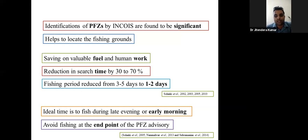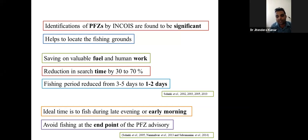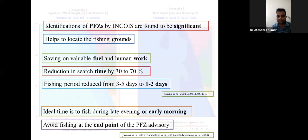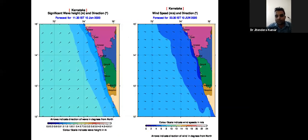There are some limitations to PFZ. The ideal time for fishing is late evening or early morning, when there is less temperature fluctuation and SST is more stable. It is also advisable to avoid the end points of the PFZ advisory boundary, as wind activity can cause the PFZ zone to shift.